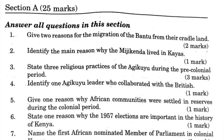Question 3: Give three religious practices of the Gikuyu during the pre-colonial period. One, they practiced ancestral worship. Two, they believed in one God, that is Ngai. Three, they worshipped God in sacred places set aside for this purpose. Four, they offered sacrifices to God. Five, their diviners interpreted God's message.